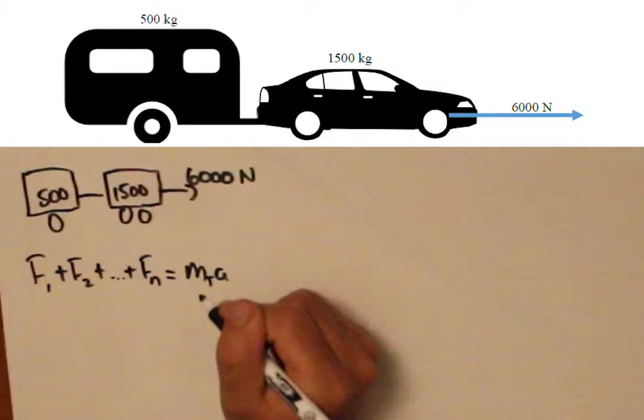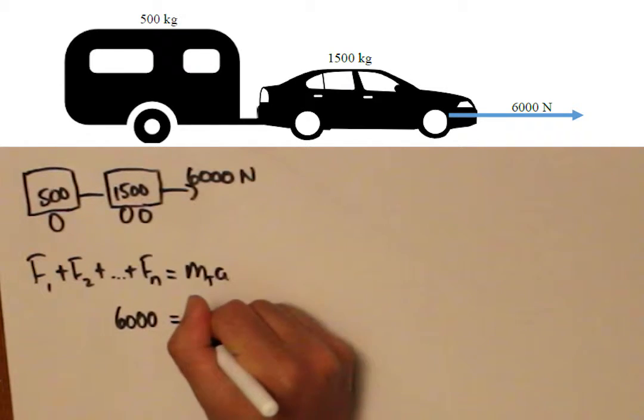Newton's Second Law is that the vector addition of all the forces will equal the total mass multiplied by the acceleration. Since the total mass is 2000kg, we can find the acceleration equal to 3m per second squared.